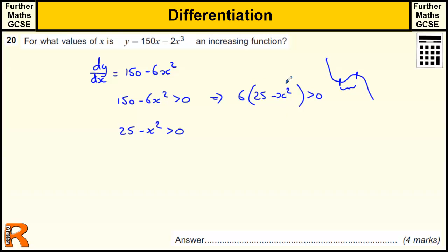And then from there we can factorize the 25 minus x squared, because that's a difference of two squares. That's 5 squared minus x squared. That's going to be 5 plus x times 5 minus x.